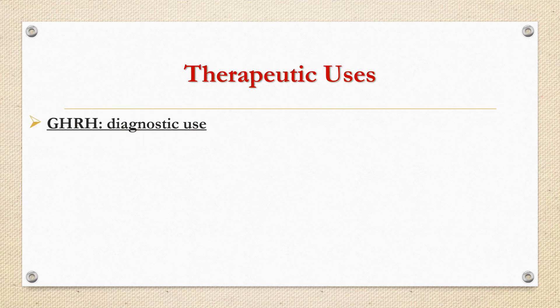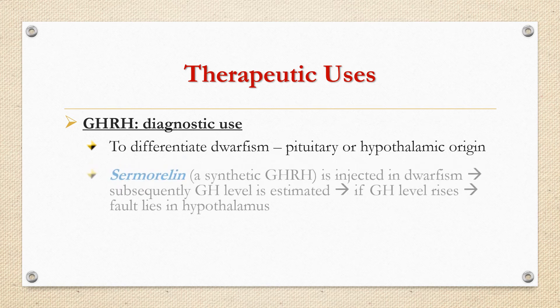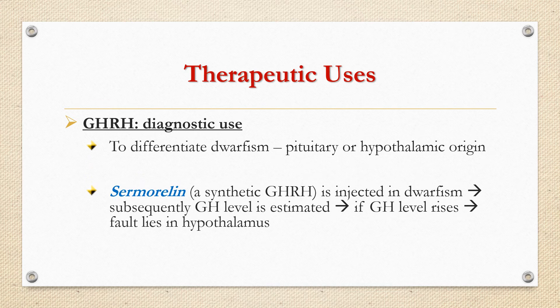Therapeutic uses: GHRH has only diagnostic use. It can be used to differentiate dwarfism of pituitary origin from hypothalamic origin. Cermoreline, a synthetic GHRH, is injected in dwarfism patients and the growth hormone level is subsequently estimated. If growth hormone level rises, the fault lies in the hypothalamus; otherwise in the pituitary.